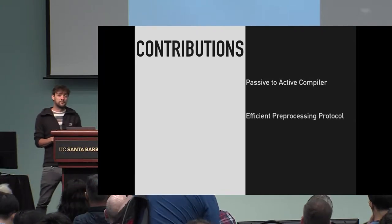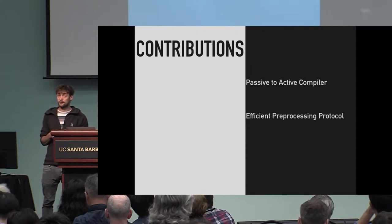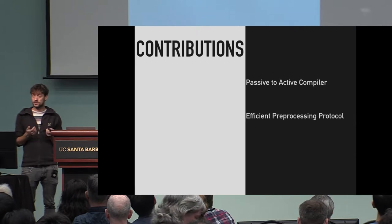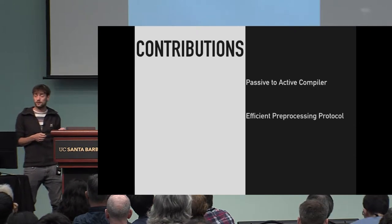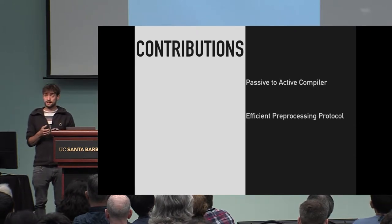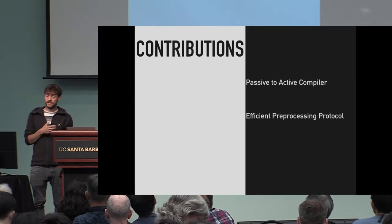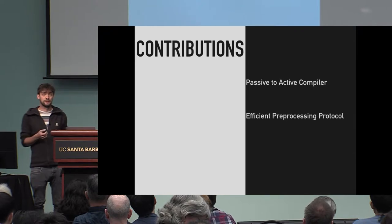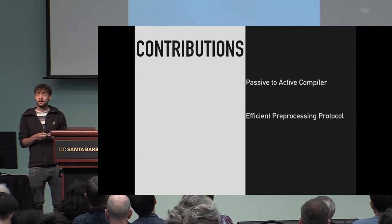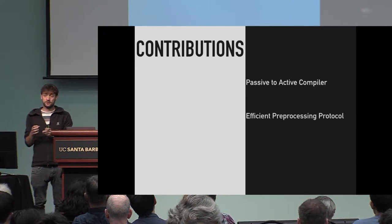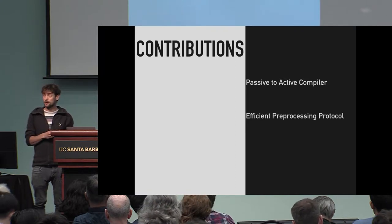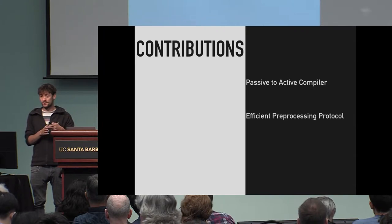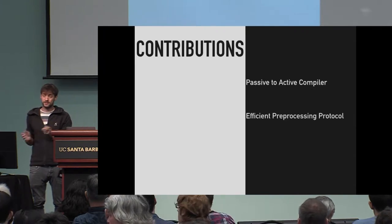As a concrete example in the paper, we look at Beaver's circuit evaluation approach, which is very similar to what you've seen before. This is where you compute on additive secret shares, add them locally, and multiply them with some correlated randomness. We apply our compiler to the online phase and then give a specific preprocessing phase, which we can use along with our compiler to get a full protocol from start to end.